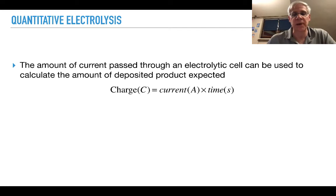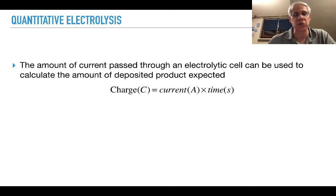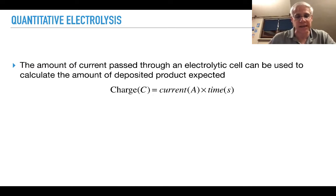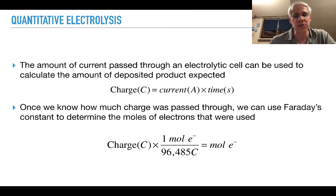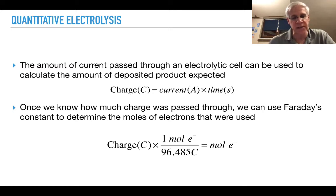We can calculate how much current passes through an electrolytic cell, which is useful for metal refinement. Charge in coulombs equals current in amps times time in seconds — time must be in seconds because a coulomb is an amp-second. Once we know the charge passed through a cell, we use Faraday's constant to determine moles of electrons. Faraday's constant is 96,485 coulombs per mole of electrons — it's a conversion factor between moles of electrons and coulombs of charge.